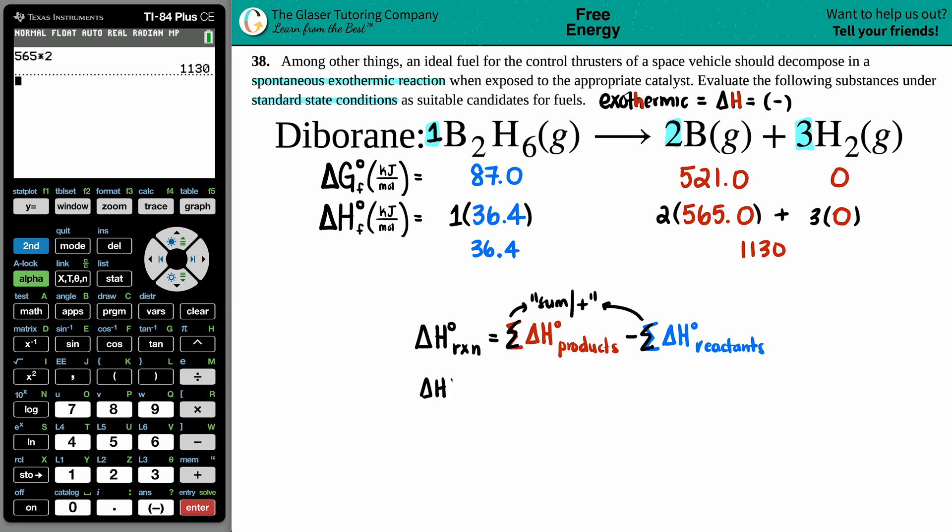Delta H for the reaction equals 1130 minus the 36.4.